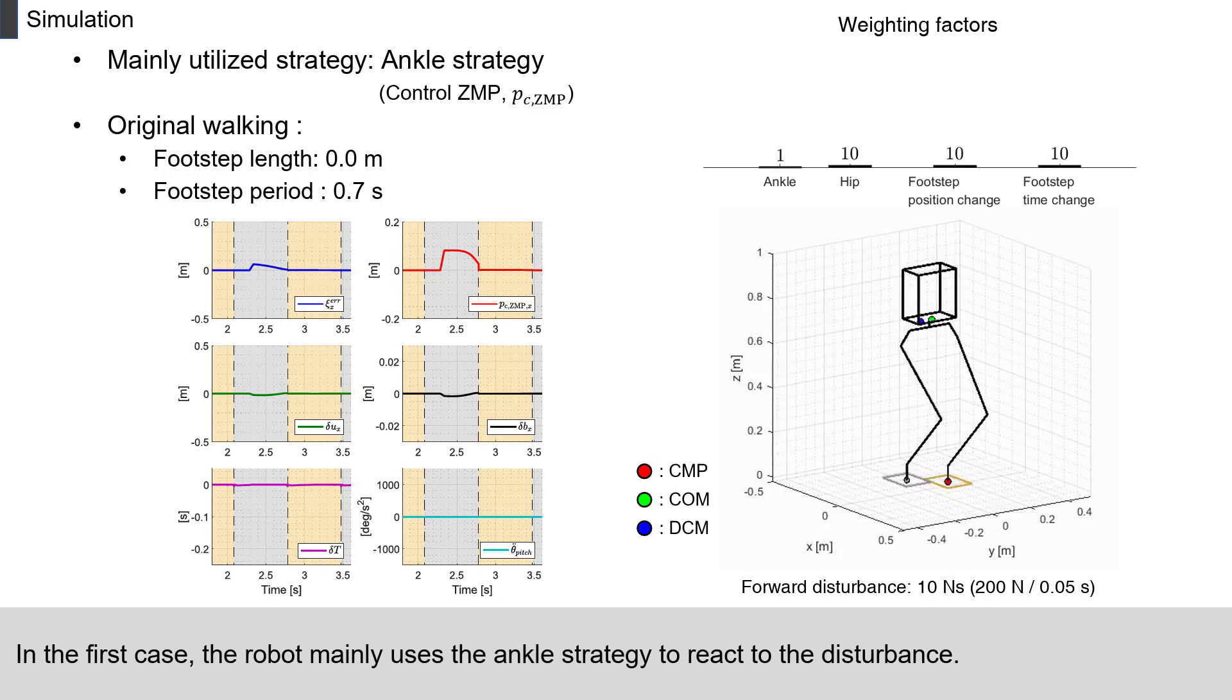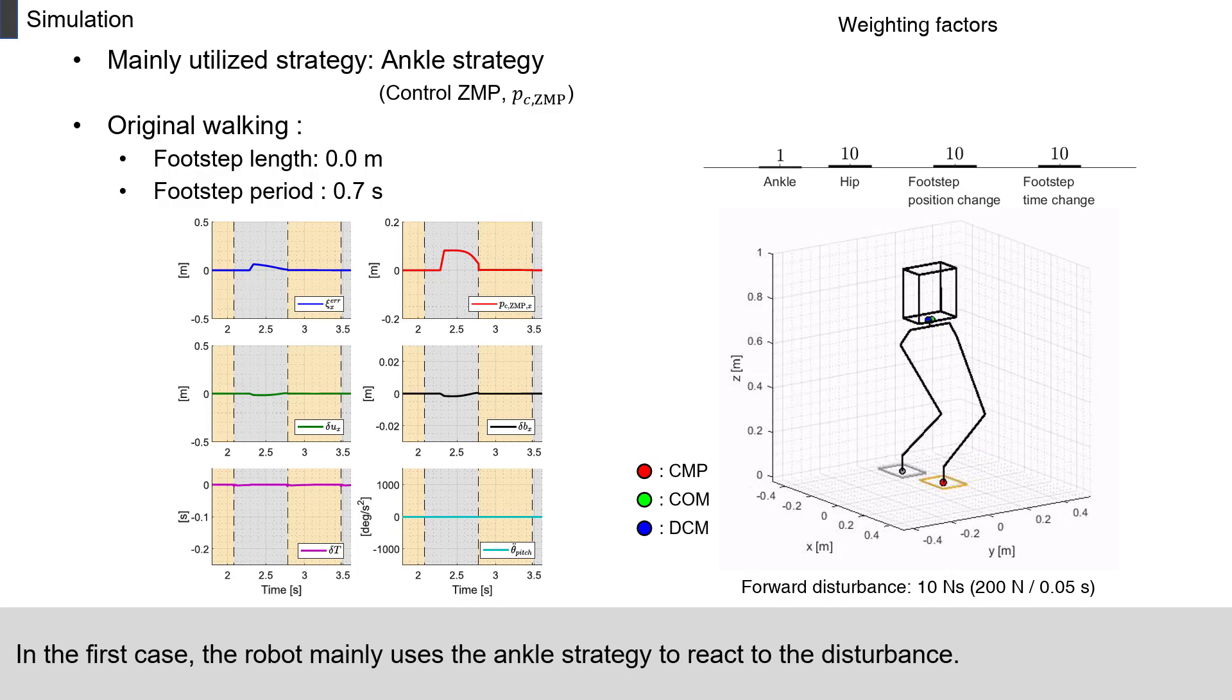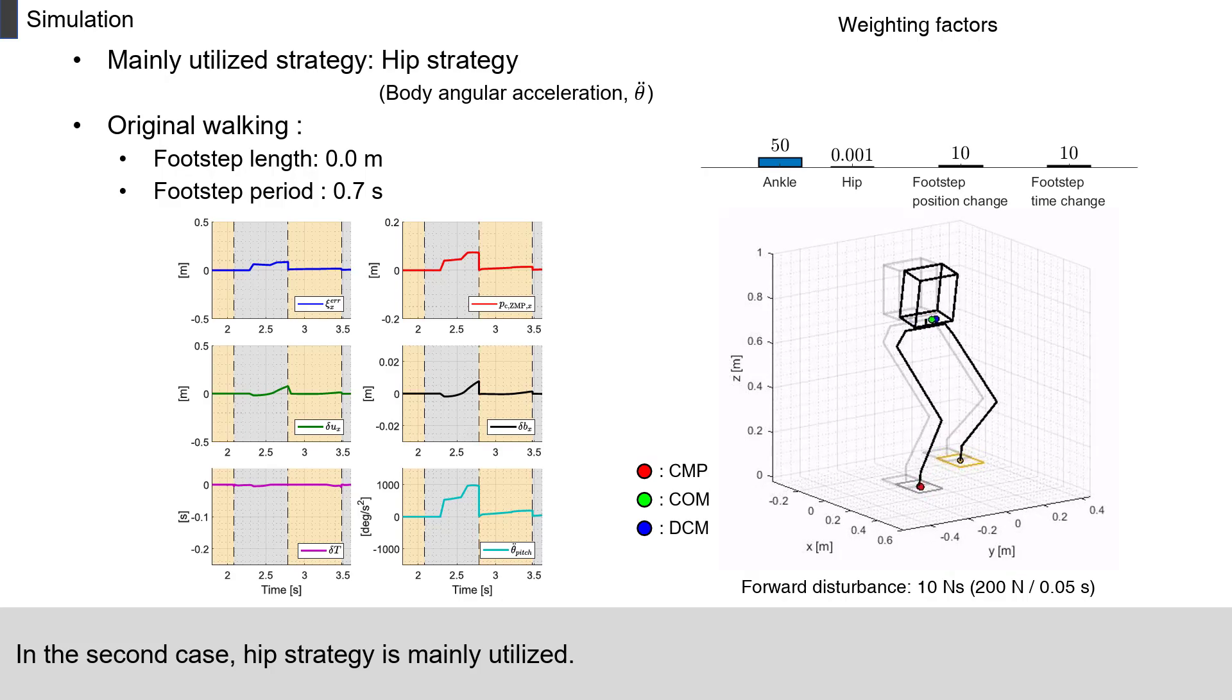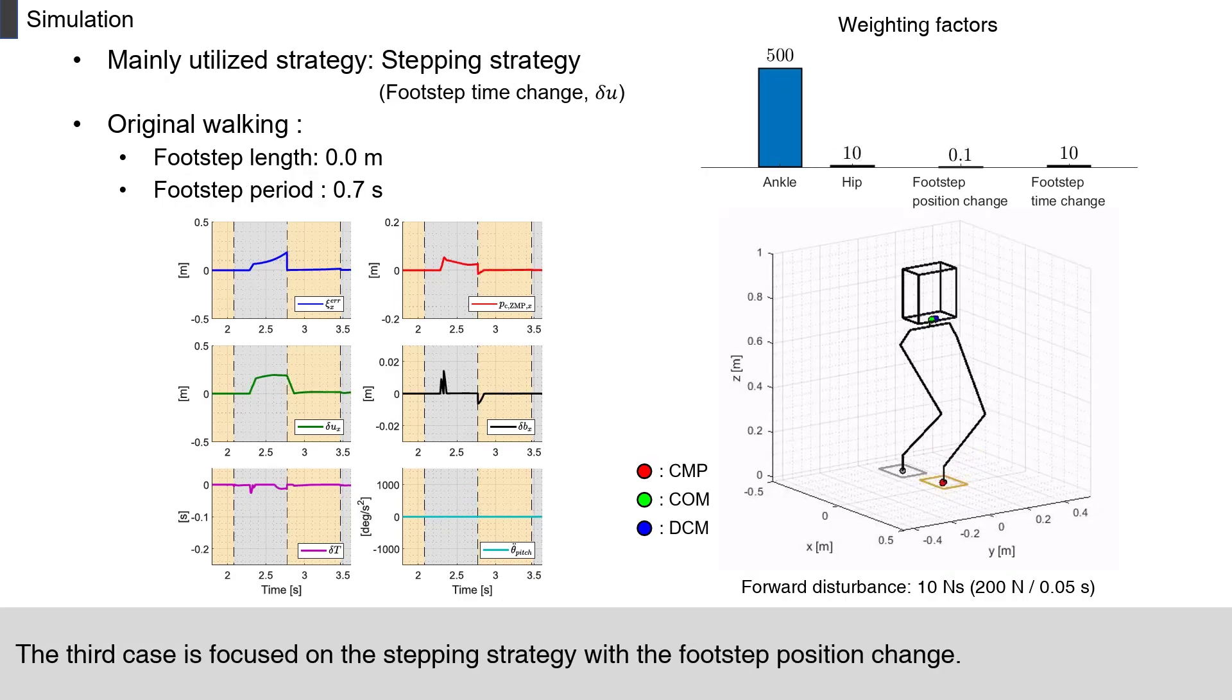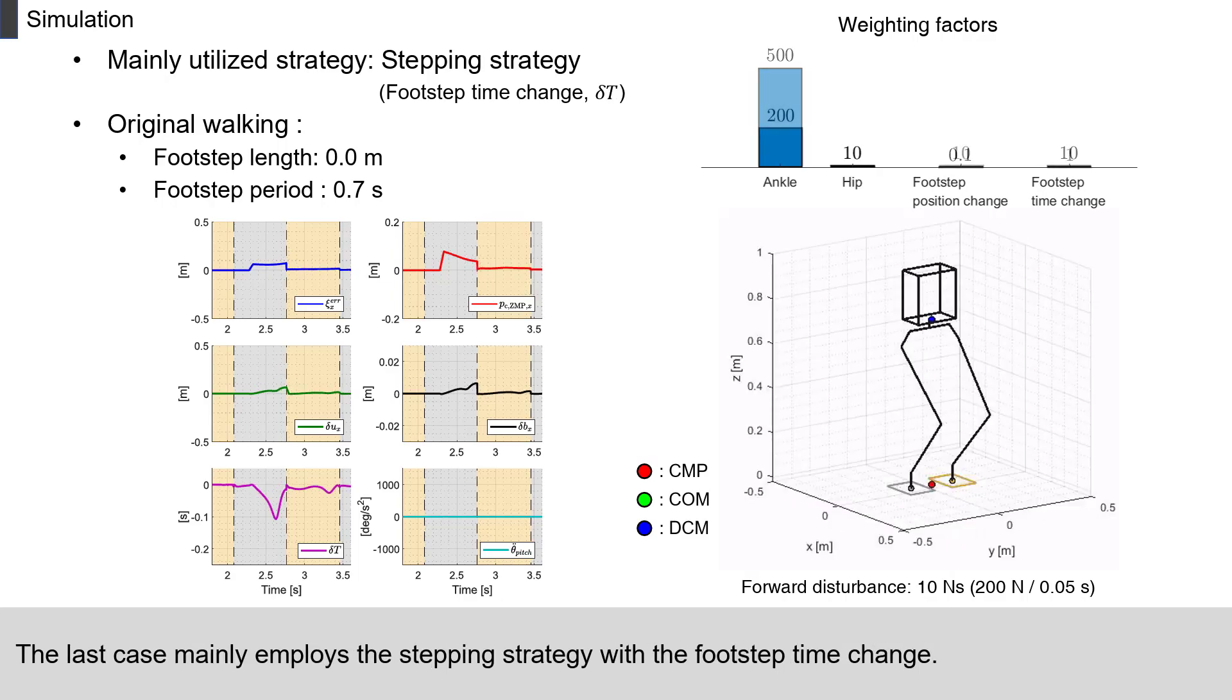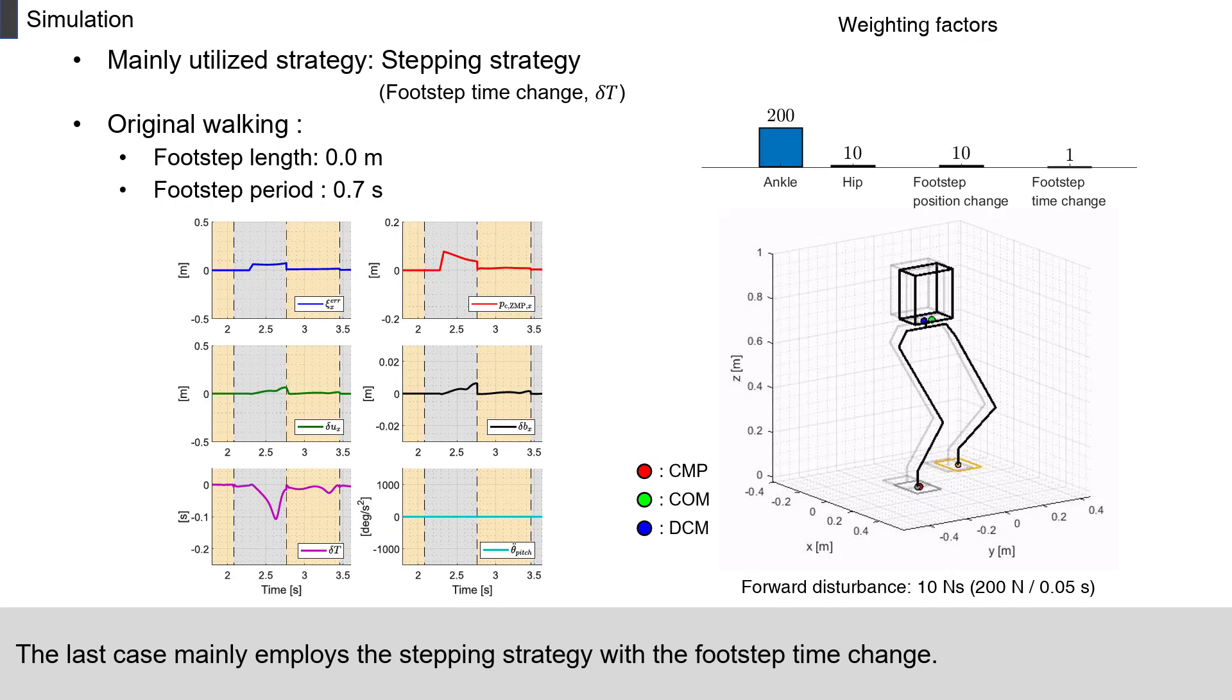In the first case, the robot mainly uses the ankle strategy to react to the disturbance. In the second case, hip strategy is mainly utilized. The third case is focused on the stepping strategy with the footstep position change. The last case mainly employs the stepping strategy with a footstep time change.